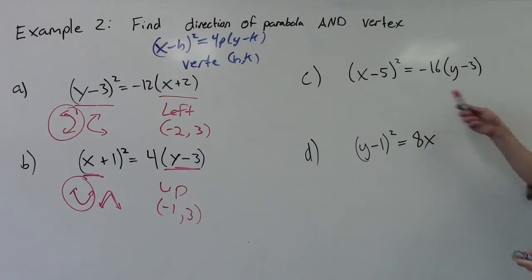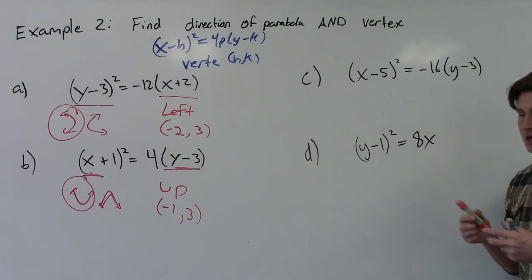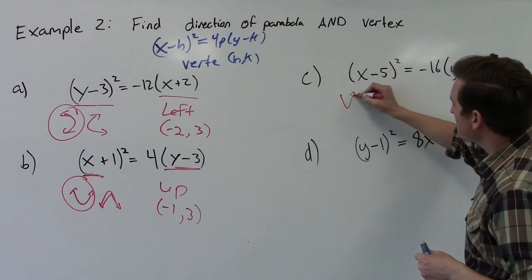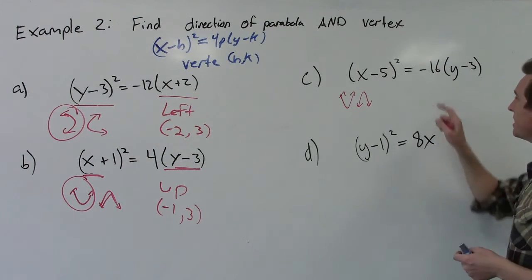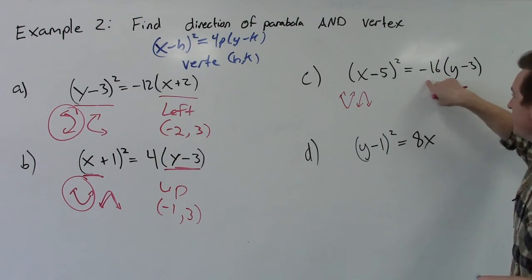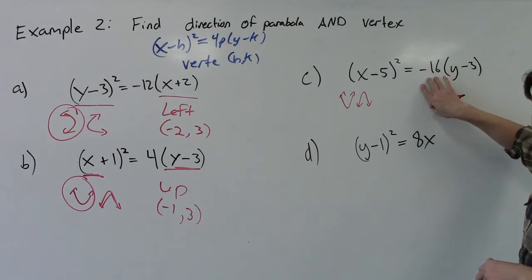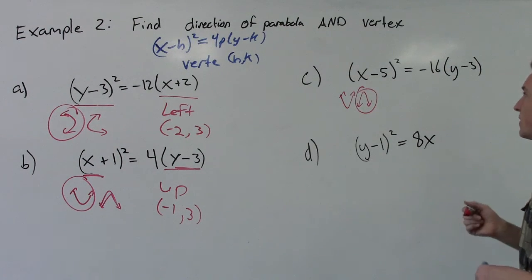Okay, over here on this side, again, we have another x-squared. So our two options when we have an x-squared parabola is it's up or down. We just got to look for a negative multiplier. Notice we're getting multiplied on the right-hand side here by a negative 16, which means that this guy's going to go down.